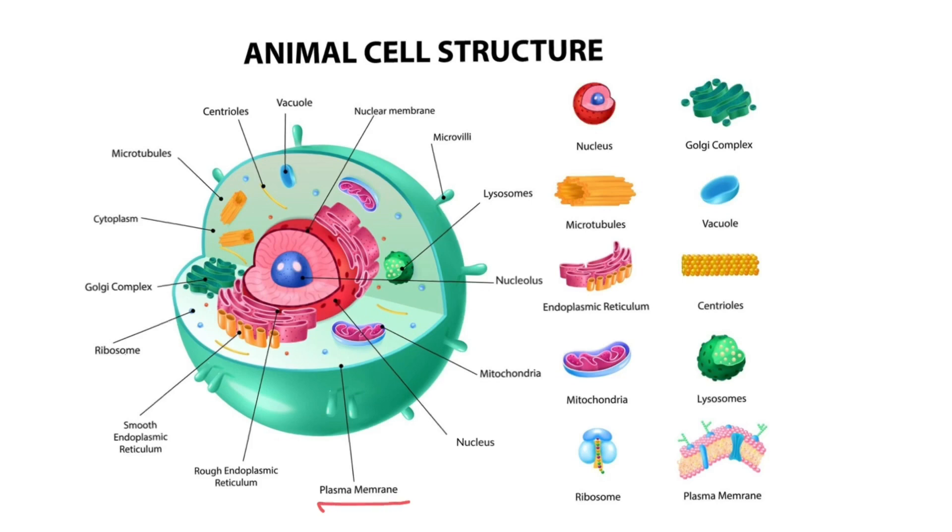The plasma membrane separates the cell from the outer environment. It also helps in the transport of material from outside of the cell to inside and inside to outside of the cell.